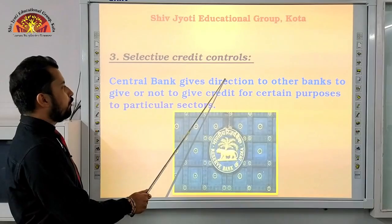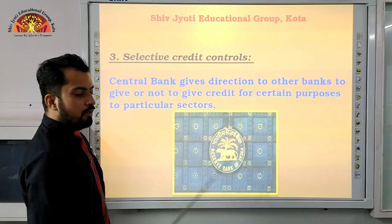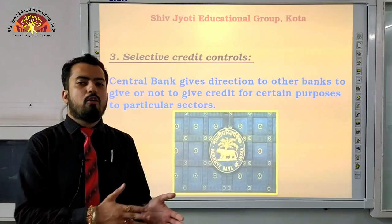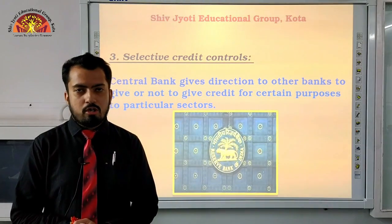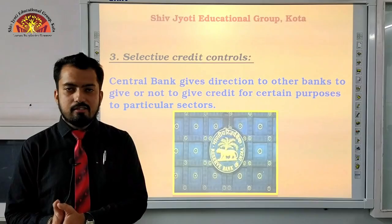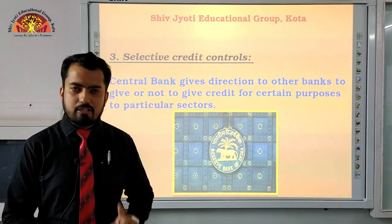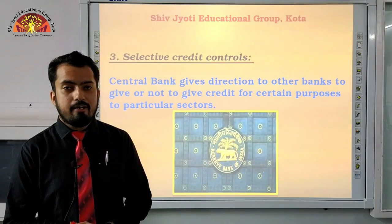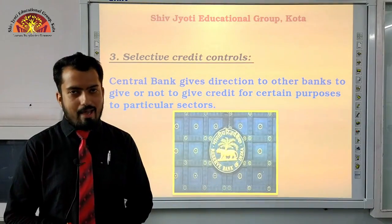The next qualitative instrument is Selective Credit Controls. The central bank gives directions to other banks on whether or not to give credit for certain purposes to particular sectors. Whenever you visit a commercial bank, you will see a list of purposes for which loans are available — such as home loans, gold loans, education loans, farming loans, and many others. These sectors and the amount of credit to be given — or whether to give it at all — are decided only by the RBI. If any commercial bank does not follow these guidelines, legal action can be taken against it.